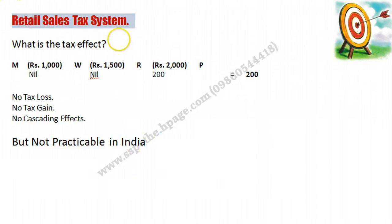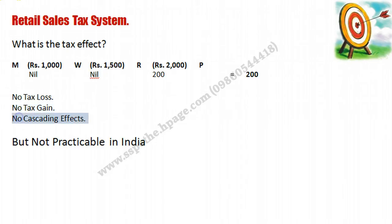Now, the Retail Sales Tax system. Tax effect: tax due is Rs. 200 and the government receives Rs. 200. In this system, there is no tax loss, no tax gain, and no cascading effects — so it should be ideal. But it is not practicable in India because there are 1,100 lakh retailers including hawkers, and it is very difficult for the government to check and monitor all of them. That is why it is not practicable in India.